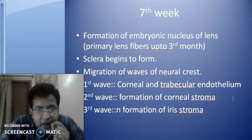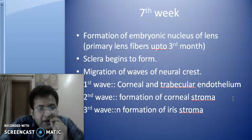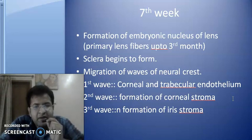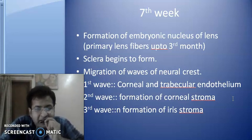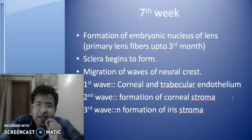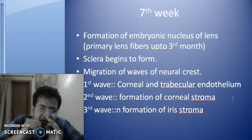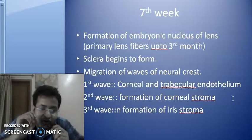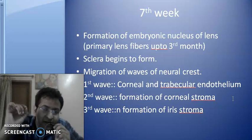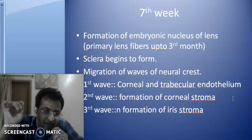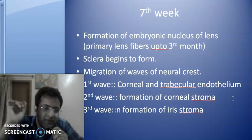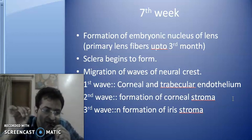At the seventh week, there is formation of the embryonic part of the nucleus of the lens, and the primary lens fibers are laid down up to the third month. The sclera begins to form. There is also a migration of neural crest cells in waves. In the first wave, the corneal and trabecular endothelium are formed. In the second wave, there is formation of corneal stroma. And in the third wave, there is formation of iris stroma.